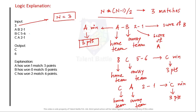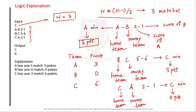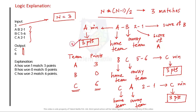So C is the leader team with 6 points because C won two matches (3+3=6). The output is C and 6. The explanation confirms: A won one match (3 points), B won zero matches (0 points), C won two matches (6 points). This is why the output is C with 6 points.